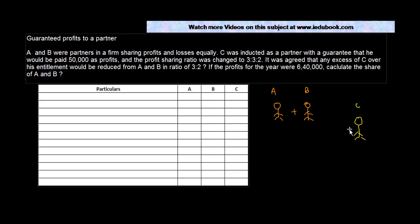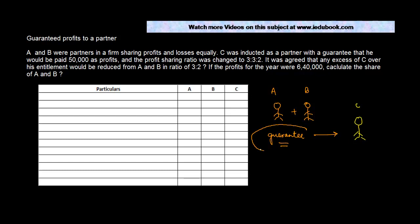So then A and B tell C, okay, you come in, we are going to give you a guarantee that we will pay you a particular amount and in case we don't, then basically we are going to bear it out of our own pocket.